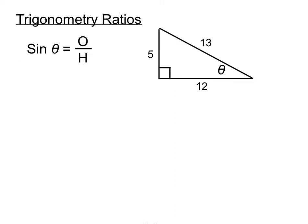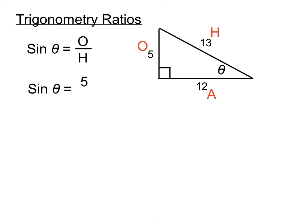In this triangle, we have Theta in the bottom right-hand corner. If we're asked to find the sine ratio for that angle Theta, we name the sides first. We label the longest side the hypotenuse with an H. On the opposite side of the triangle from Theta we have the 5, so that's the opposite side, and the remaining side is the adjacent side. So sine Theta equals 5 over 13.